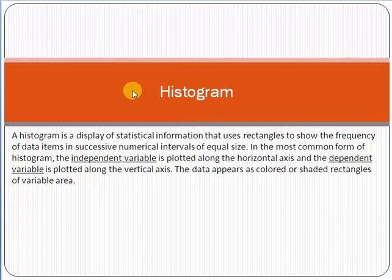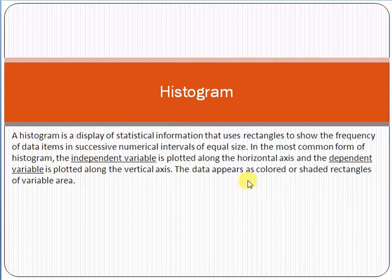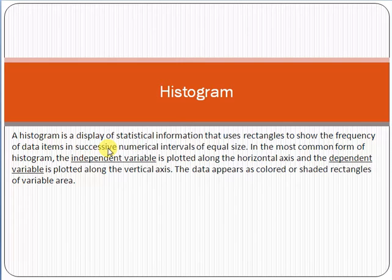Histogram is a graphical representation of data with two axes: the x-axis (horizontal) and the y-axis (vertical). The independent variable is always plotted on the horizontal axis, and the dependent variable is always on the vertical axis. We will look at some examples to make this easy to understand.